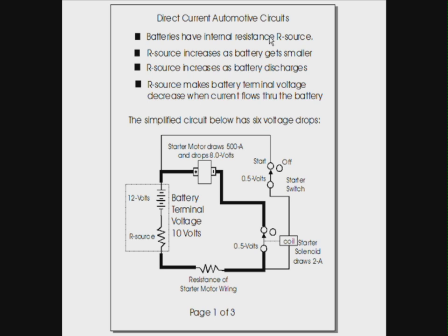Batteries have internal resistance — we're going to call it R source. R source increases as batteries get smaller, so a big fat truck battery has much less resistance than a little skinny Honda Civic battery. R source also increases as the battery discharges. As your battery gets run down, the resistance of the battery increases. This little square represents everything that comprises the battery: the battery itself plus the internal resistance, all in one lump sum called R source.